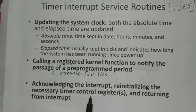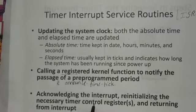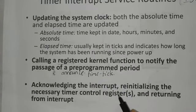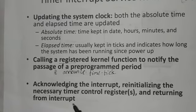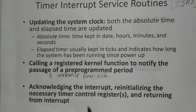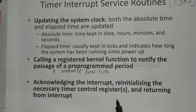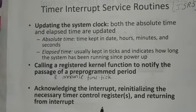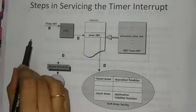The next step is acknowledging the interrupt. Whenever a device interrupts the processor, after the announcement of the time tick, the interrupted program is executed or completed, and the status of this interrupt is submitted to the device. Afterwards, the necessary time control registers are re-initialized and control returns from the interrupt. After completion, the previously stopped or suspended task resumes running.